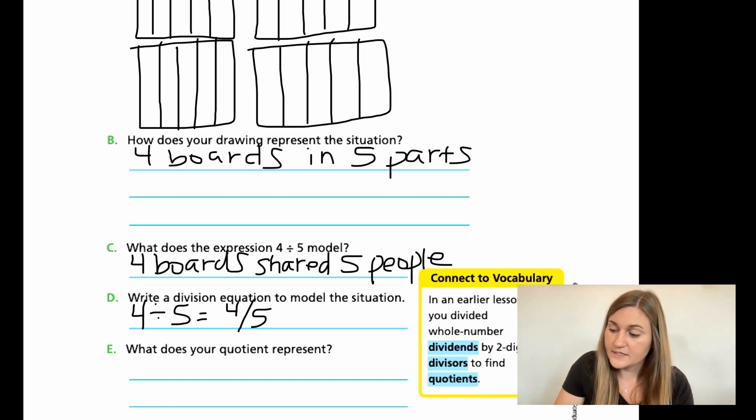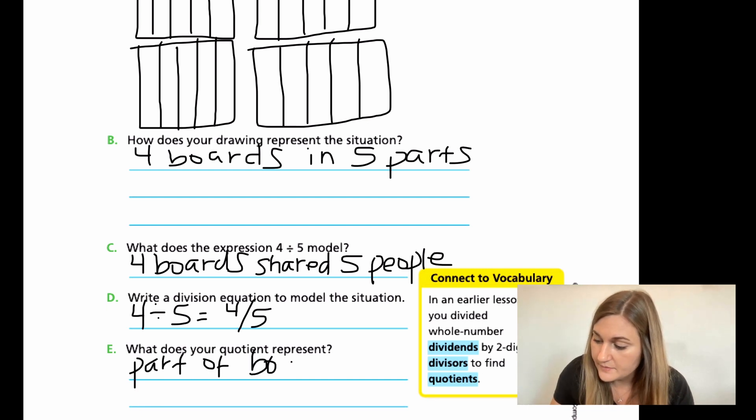And then E, what does your quotient represent? My four fifths represents the part of the board for each student. So part of board per student.